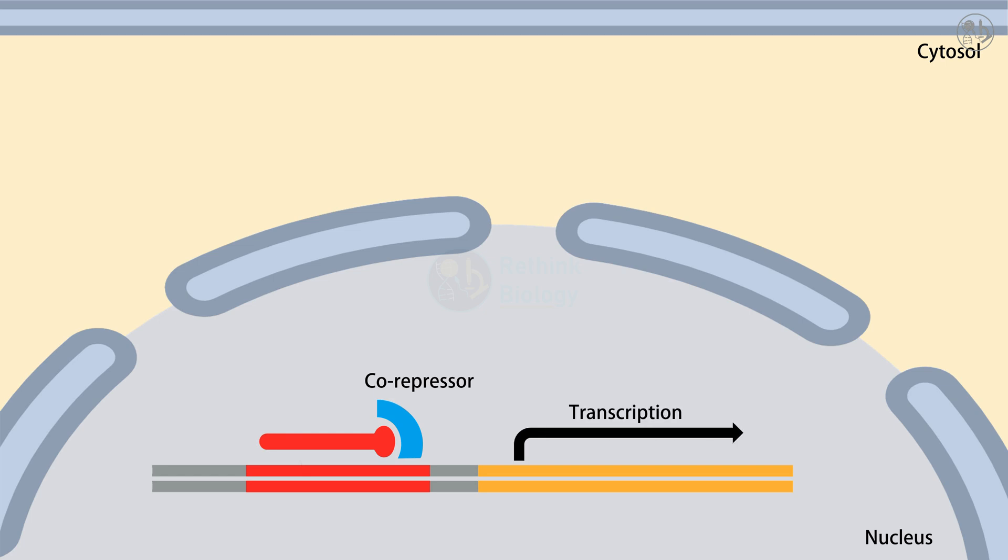The genes that are activated by Ci are involved in various biological processes such as cell fate specification, tissue polarity, and growth.